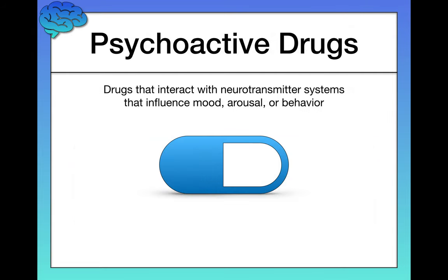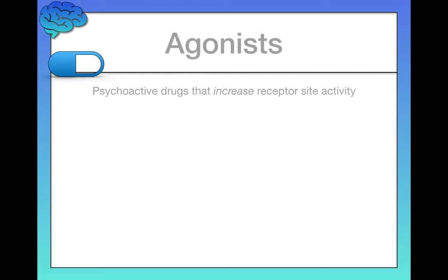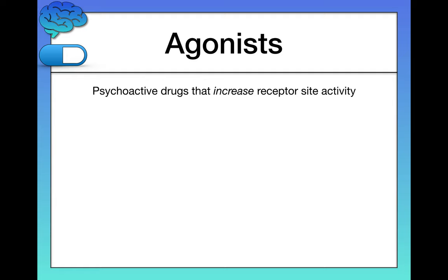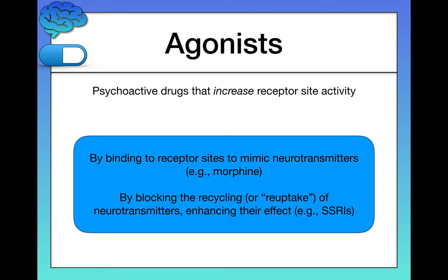Psychoactive drugs are drugs that interact with neurotransmitter systems to influence mood, arousal, or behavior. There are two types, categorized by how they interact with neurotransmitter systems. Some psychoactive drugs are agonists, meaning they increase receptor site activity. They can do this by binding to receptor sites to mimic neurotransmitters — this is how morphine works, essentially pretending to be dopamine, fitting the shape of that key to the lock — or by blocking the reuptake of neurotransmitters, as SSRIs do.